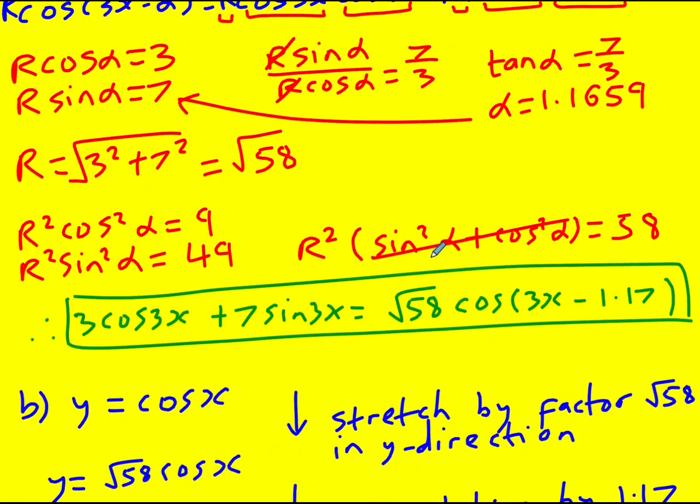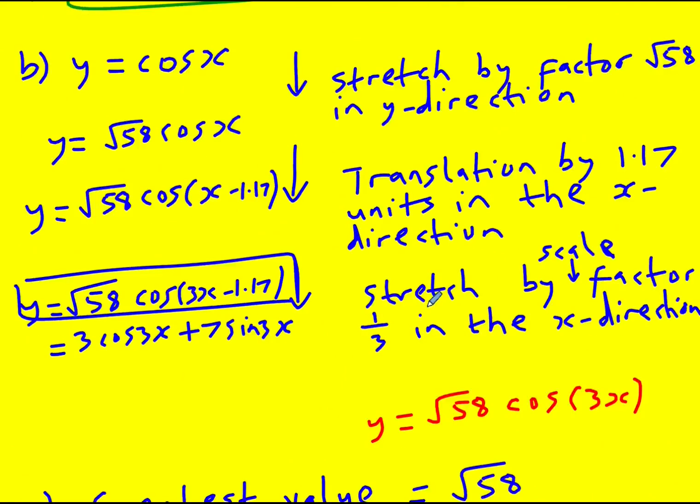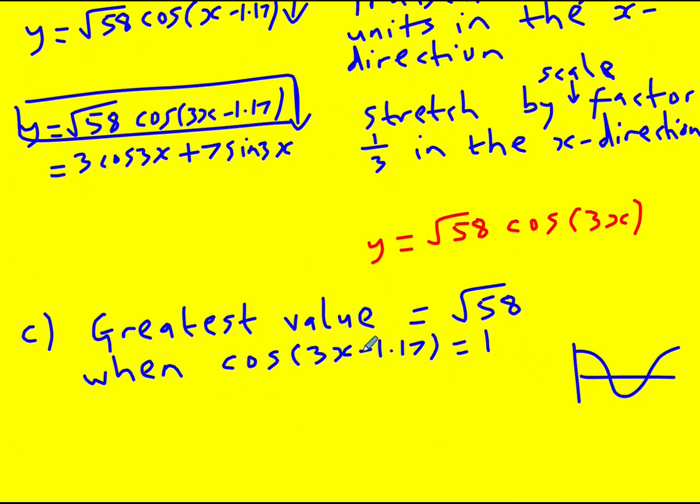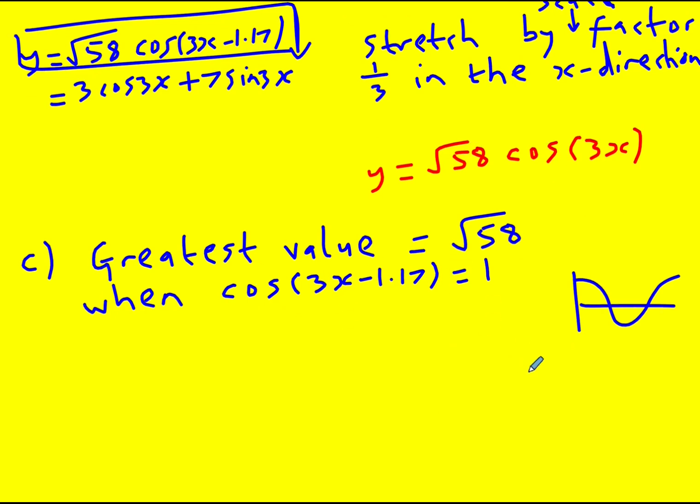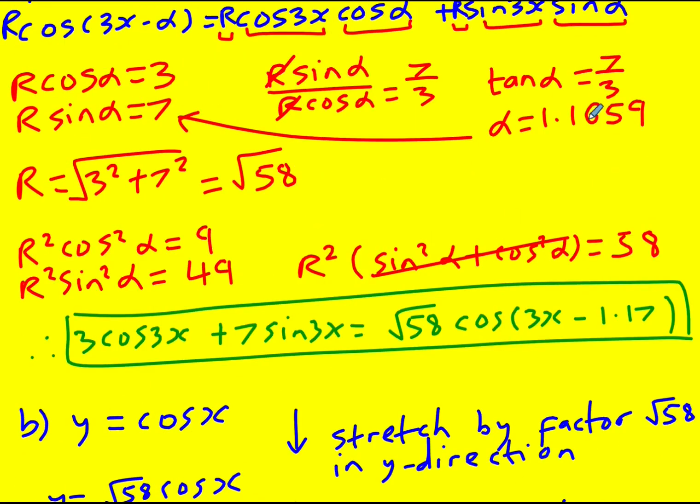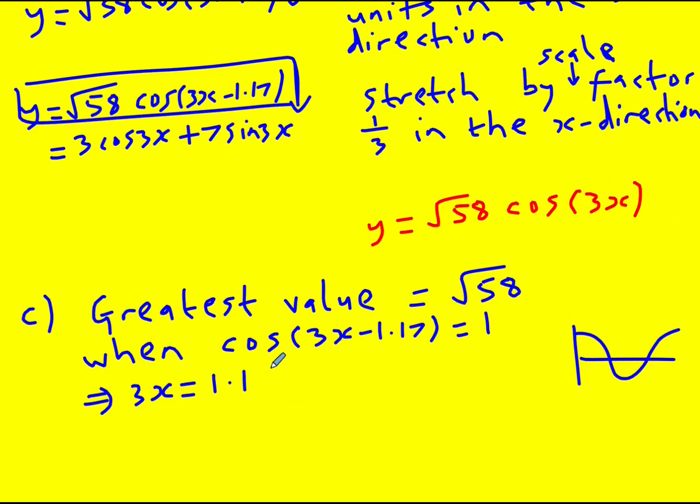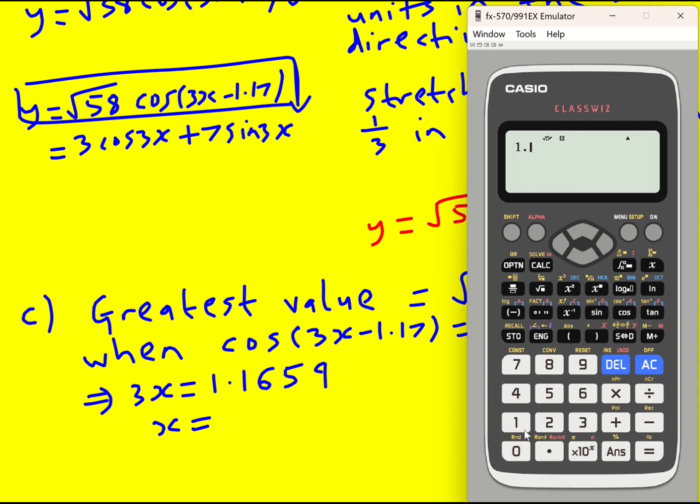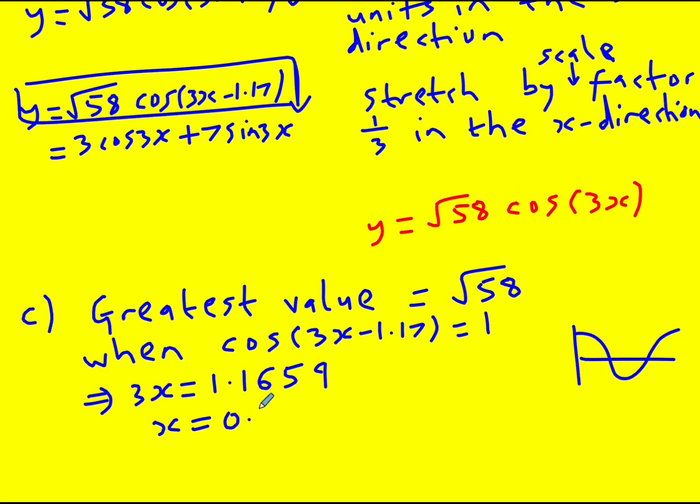Does it ask for the smallest? It normally does. The smallest positive value of x for which it occurs. So there are other values for which it occurs, but they would be negative, but they're not going to be - if we add 1.17 on, it's not going to make it positive. So it's going to be when 3x is equal to 1.17, although I should at this point technically use the non-rounded version, 1.1659. And therefore x is 0.387. I think if you use 1.17, then that won't come out to be the same. So three significant figures here. And I'll leave this exact. It doesn't really say. So I think if you left it to three significant figures, you'd be all right.